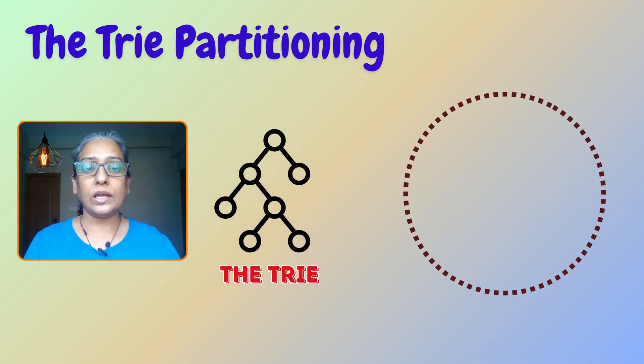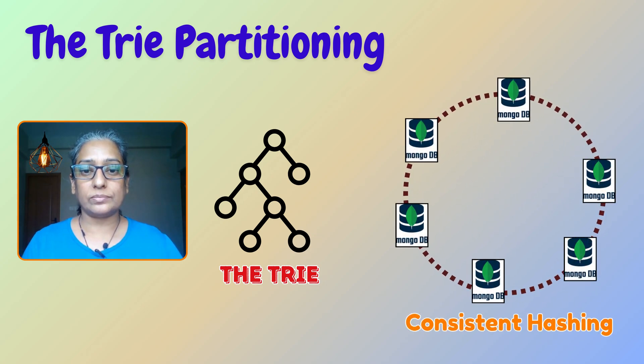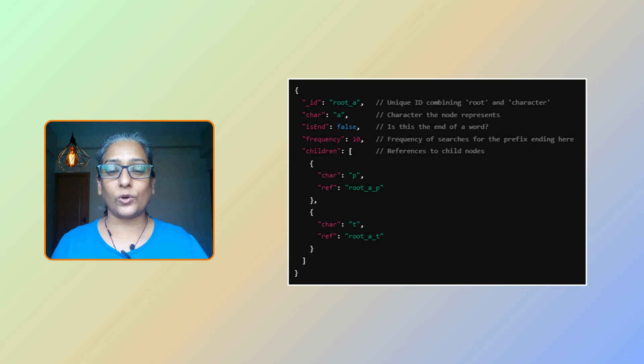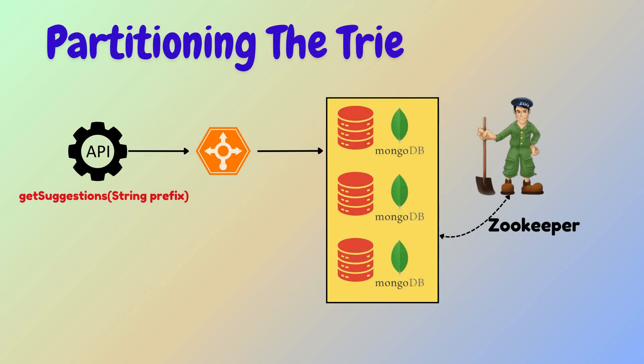Since the trie needs to store data for 3.5 billion searches, it becomes too large to store on a single MongoDB node. To handle this, we distribute the trie across multiple MongoDB nodes using consistent hashing, which allows us to evenly partition the trie across several nodes, ensuring scalability and fault tolerance. Here is a sample JSON document to store the trie in MongoDB. We rely on ZooKeeper to manage partition information and direct requests to the appropriate MongoDB node based on the prefix.